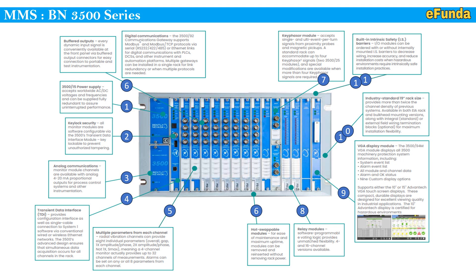Sixth — hot swappable modules for ease of maintenance and maximum uptime: modules can be removed and reinserted without removing rack power. Seventh — key phase module: accepts single and multi-event per turn signals from proximity probes and magnetic pickups. A standard rack can accommodate up to 4 key phaser signals via 3500/25 modules; special modifications are available when more than 4 key phaser signals are required.